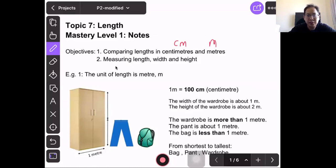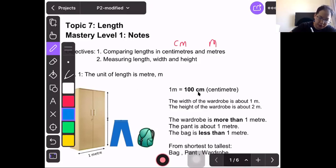Second objective, we need to learn how to measure the length, the width, and the height. Let's begin with example one. The units of length is meter, m. For example, can you see this wardrobe where you hang your clothes? This wardrobe, the width is about one meter and the height of the wardrobe is about two meters. If you are changing one meter to centimeter, one meter equals 100 centimeters.